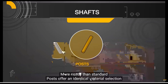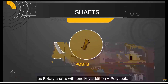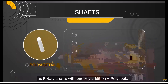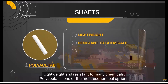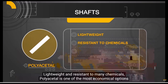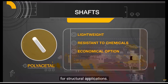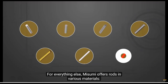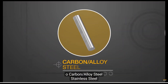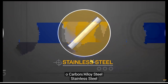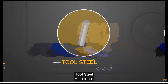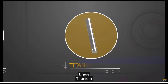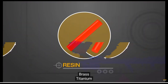Posts offer an identical material selection as rotary shafts with one key addition: polyacetyl. Lightweight and resistant to many chemicals, polyacetyl is one of the most economical options for structural applications. For everything else, Misumi offers rods in various materials including carbon alloy steel, stainless steel, tool steel, aluminum, brass, titanium, and resin.